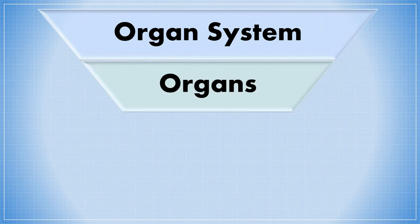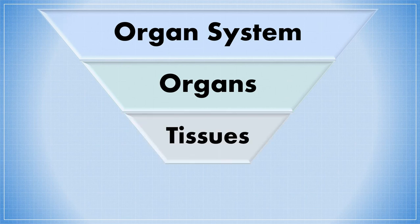In other words, these organ systems are made up of organs, which are in turn made up of a group of tissues, and the tissues are made up of a group of cells. So we can say that cells are the smallest unit that make up a living organism.